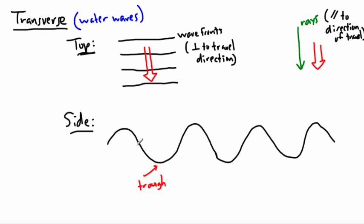A trough is like a little place — I've been on a farm where they put food for the pigs in a trough. So the bottom of a wave is called a trough, whereas the top of the wave is called a crest. If you're surfing, you want to stay near the top of the crest. Keep in mind, these waves would travel to the right. So there are troughs and crests — those are features of transverse waves.